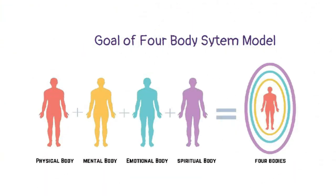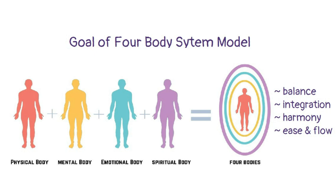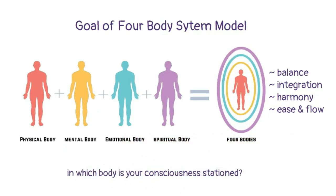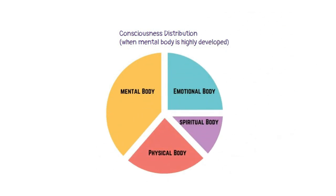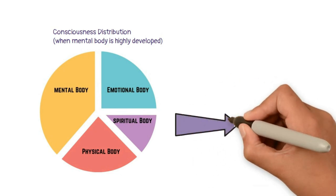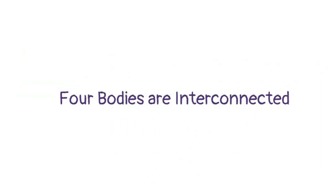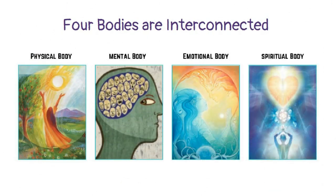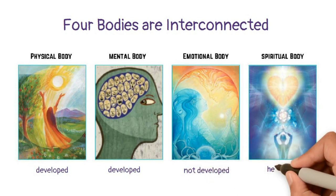At the heart of the four-body model is what we are aiming for: balance, integration, harmony, ease, and flow between these four bodies. Close your eyes and reflect on your life — see where your consciousness is stationed for the most part. Is it in your mental body, your physical body, your emotional, or your spiritual body? Chances are, if you are highly developed mentally, the real estate of your consciousness is uneven. What we want is for each body to be balanced, making 25% of the wholeness. All four bodies are interconnected — if our mental and physical bodies are developed but our emotional body is not, our spiritual body will suffer.